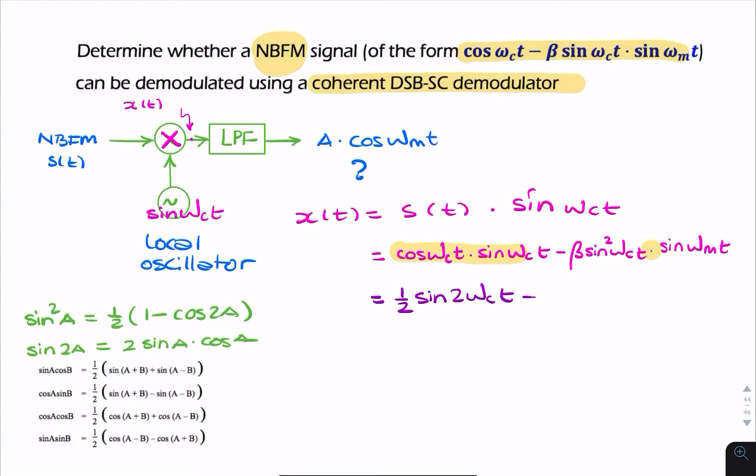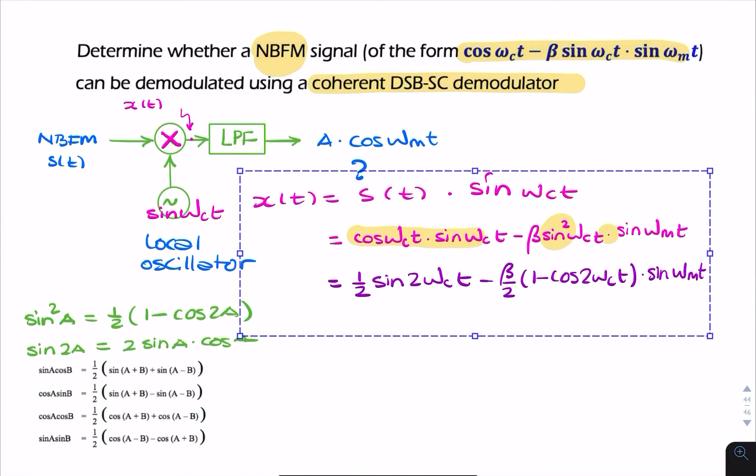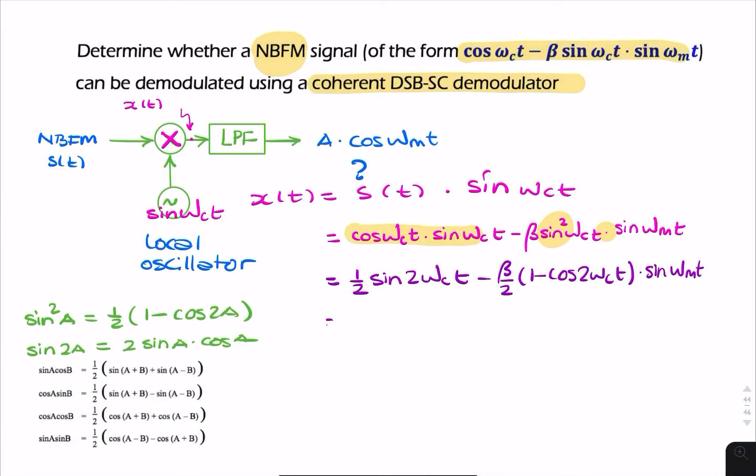So cosine sine is ½ sin 2ωct minus, now what have we got? We've got sine squared. So this sine squared, we can rewrite as ½(1 - cos 2ωct). So that becomes -β/2 (1 - cos 2ωct), all multiplied by sin ωmt. And let me move this along to make some space.